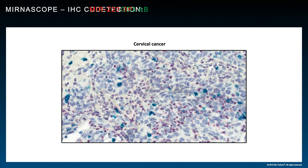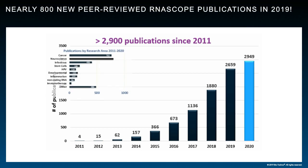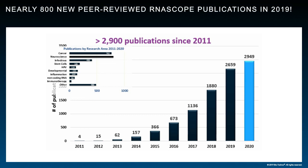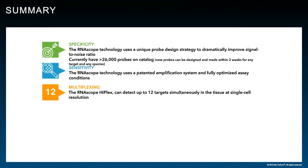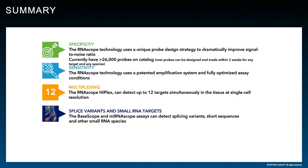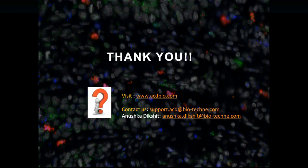We have almost 3,000 publications with coverage in diverse research areas — cancer, neuroscience, and infectious disease being our top areas. Overall, our assay is highly specific with over 26,000 catalog probes, highly sensitive, allows multiplexing to visualize up to 12 targets on the same section, allows detection of small targets, and allows combining ISH with IHC or IF to visualize RNA and protein simultaneously.